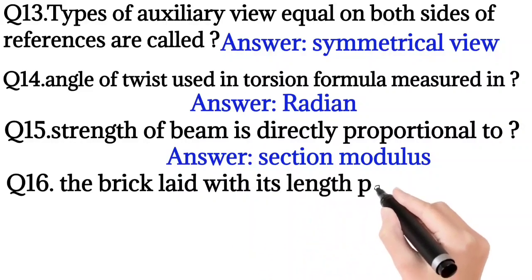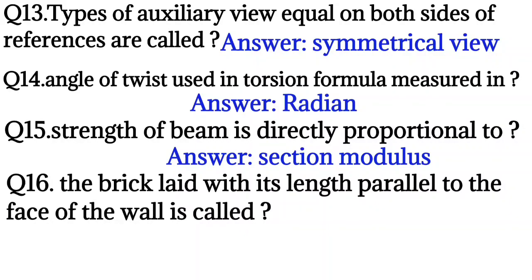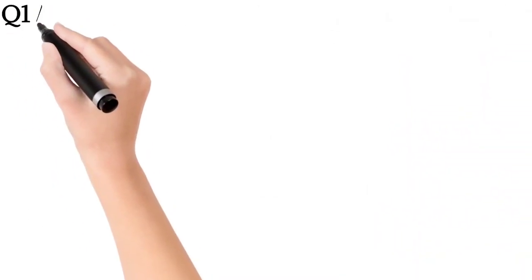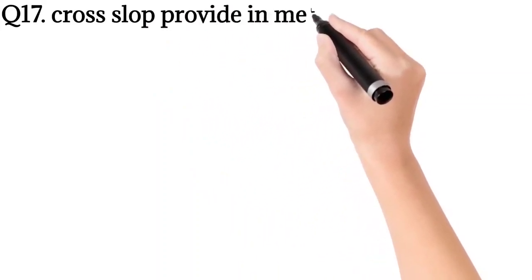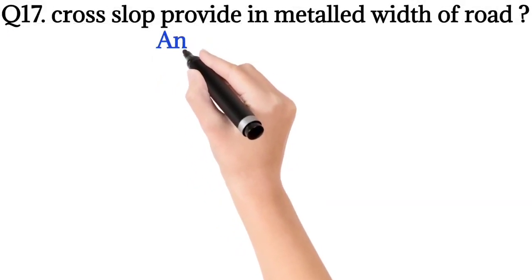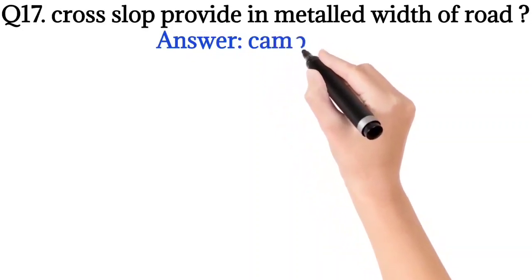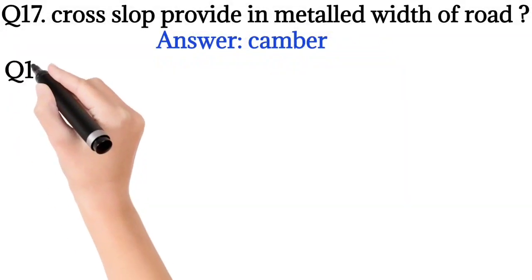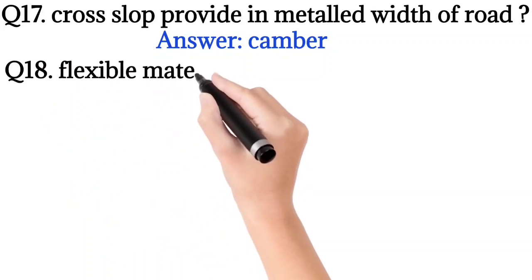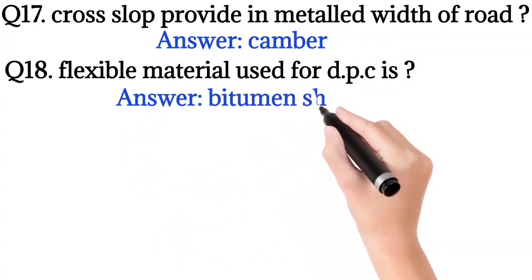Question number 16: The brick laid with its length parallel to the face of the wall is called? So the answer is stretcher. Question number 17: Cross slope provided in metalled width of road? So the answer is camber. Question number 18: Flexible material used for DPC is? So the answer is bitumen sheeting.